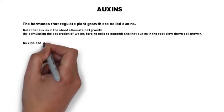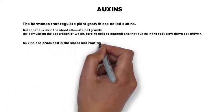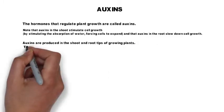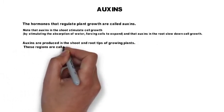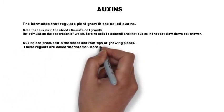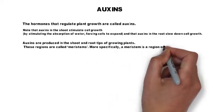Auxins are produced in the shoot and the root tips of growing plants. These regions are called meristems. More specifically, a meristem is a region of cell division in a plant.